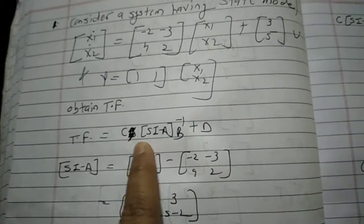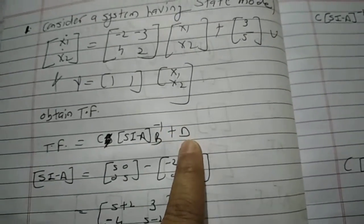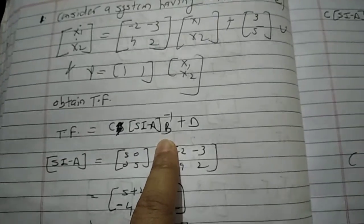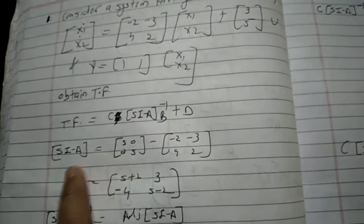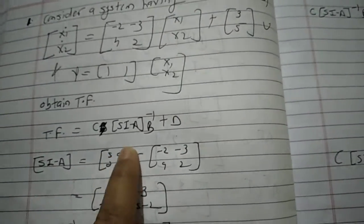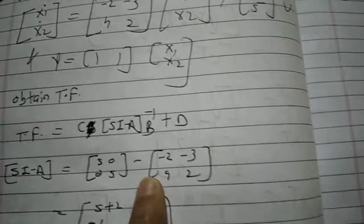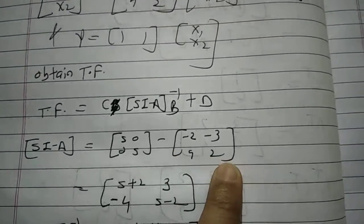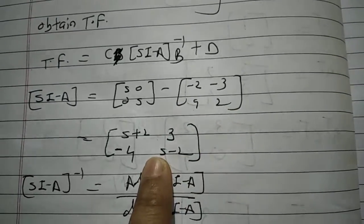Transfer function equation is C times SI minus A inverse times B plus D. This we already studied in previous videos. First we will obtain SI minus A. SI is S 0, 0 S. A is this one, so minus A. So you get this one, SI minus A.